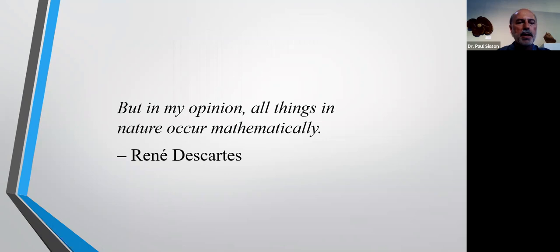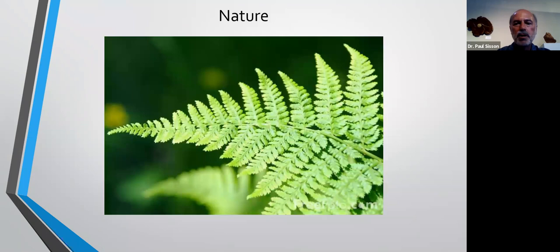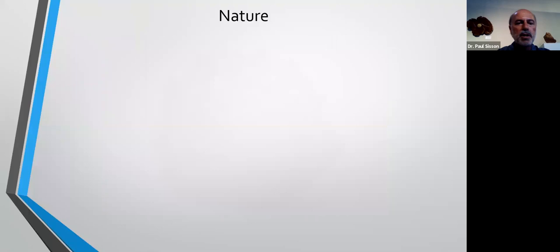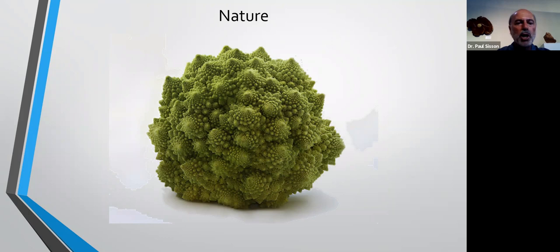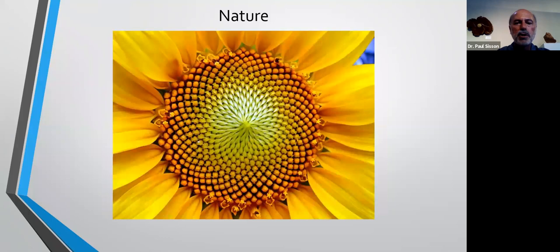Now let's move on to math and art as they appear in nature. There are many examples — you can find fractal patterns in many different plants and animals. Here's a fractal pattern demonstrated by a fern, and here's one demonstrated by a variety of broccoli, and a sunflower demonstrating a Fibonacci-like sequence. Fibonacci-like sequences show up in sunflowers and pine cones, many other places, and even the arrangement of eyes in a peacock's tail.